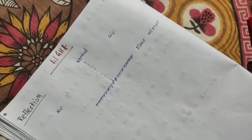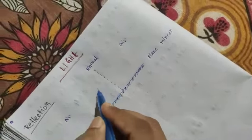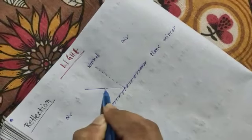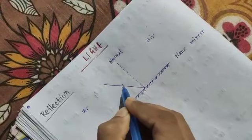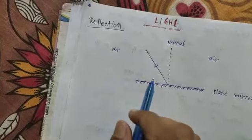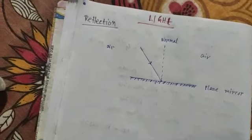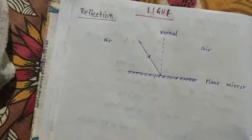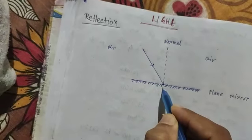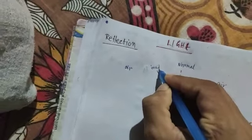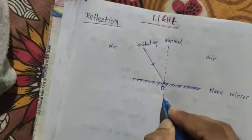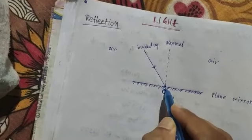The incident ray is the ray which strikes the surface. The ray direction is important. The point where the incident ray strikes the mirror or surface is called the point of incidence.